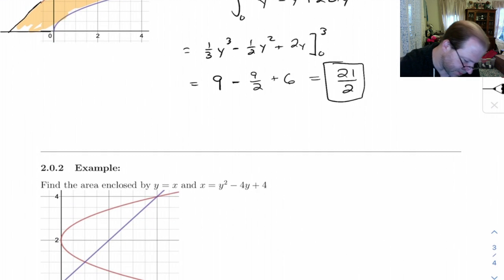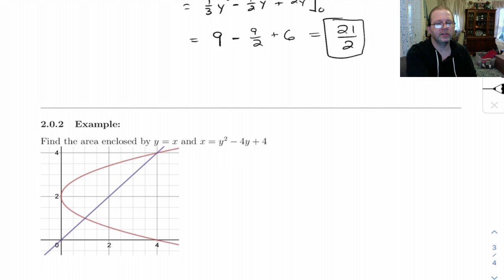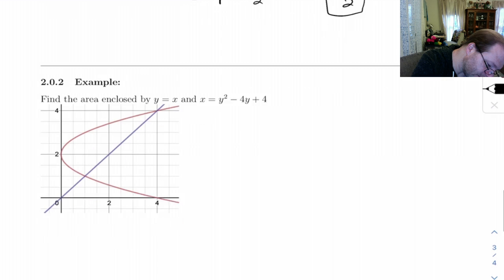Let's look at this example. Find the area enclosed by this parabola and this line. Alright. So, on this one, they gave us the graph, so we can look at it and see what the points are where the two curves intersect.